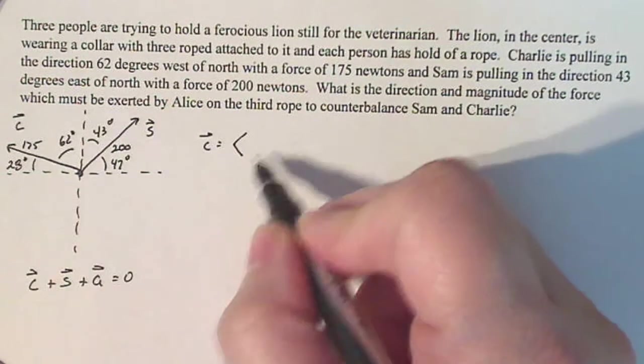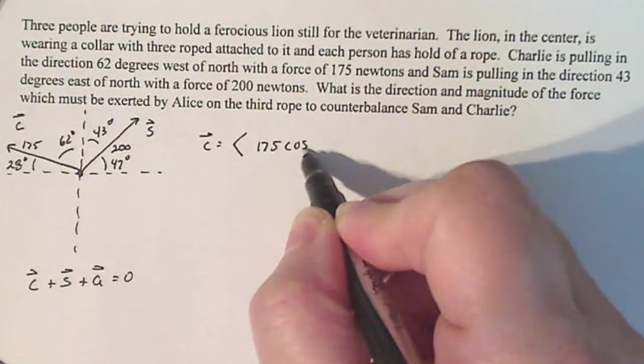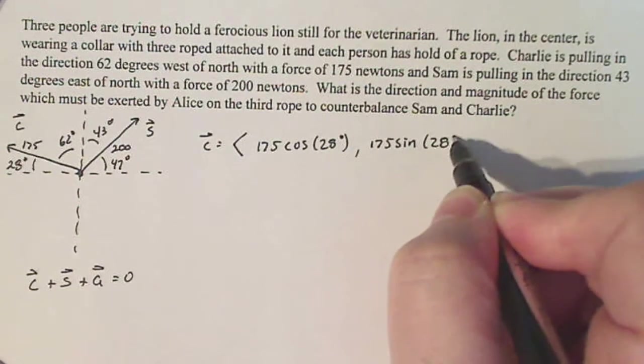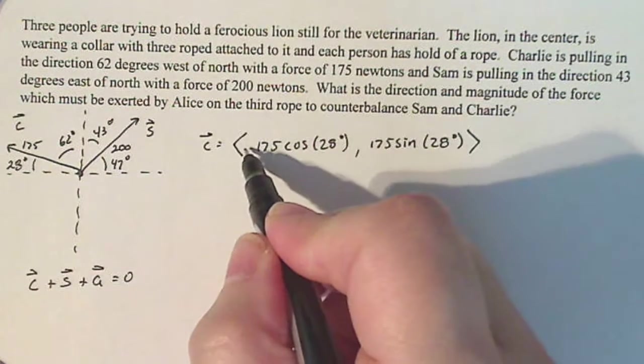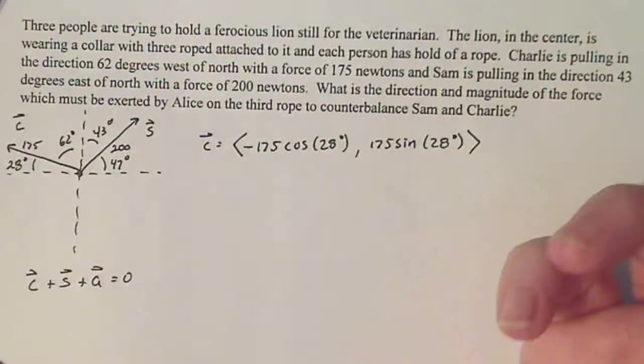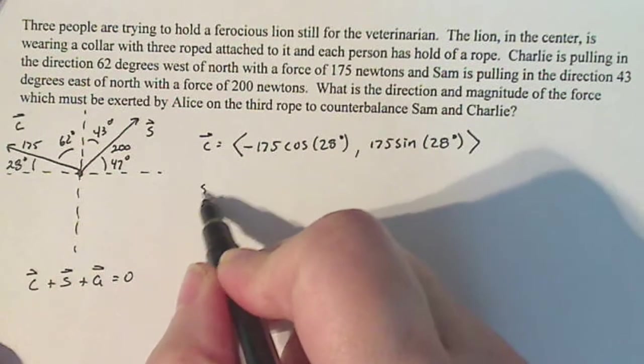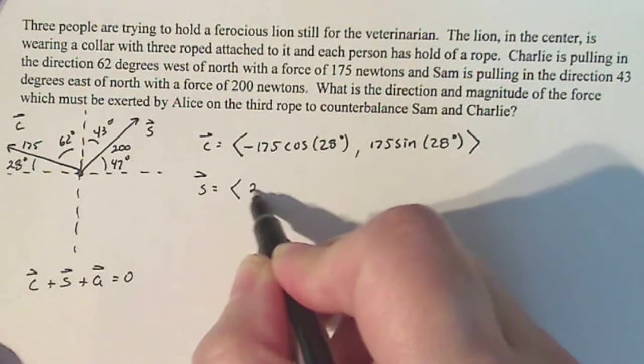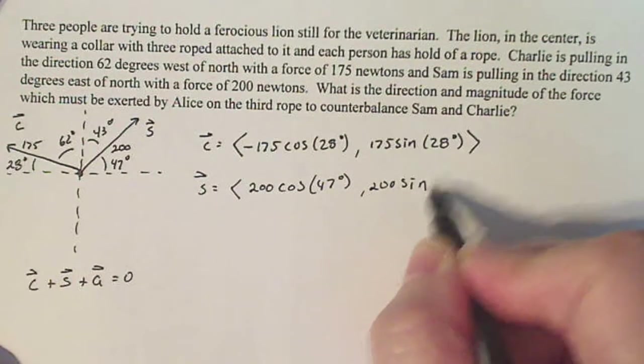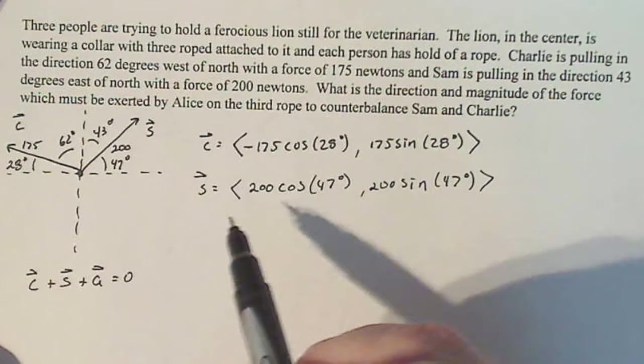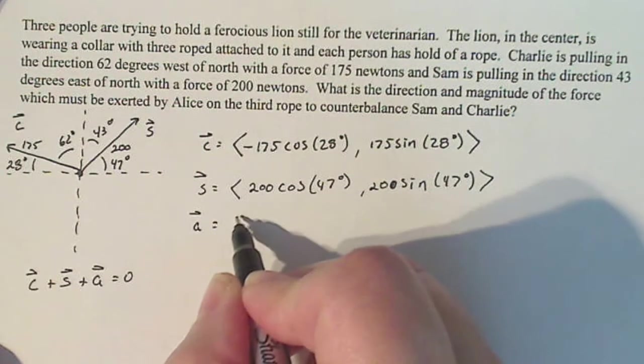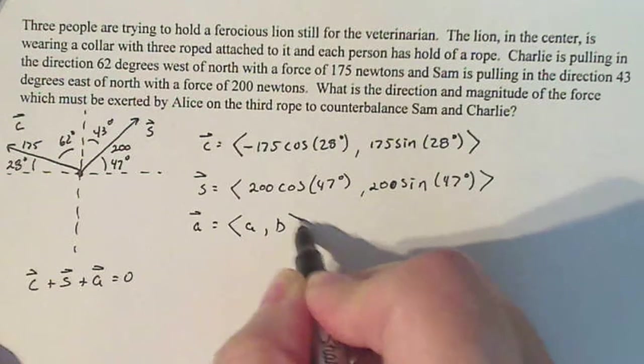So when you define a vector, make sure that you always work with the angle that's compared to the horizontal axis, not the vertical axis. It's just, again, it makes it more consistent. So I'm going to have 175 cosine of 28 degrees and then 175 sine of 28 degrees for Charlie. Now I'm in the second quadrant, so that means the i component needs to be negative. So S is going to be 200 cosine of 47 degrees, 200 sine of 47 degrees. And since I'm in quadrant one, both components i and j will be positive. Now I'm just going to say that Alice is just the vector a, b. Those are the components for Alice.